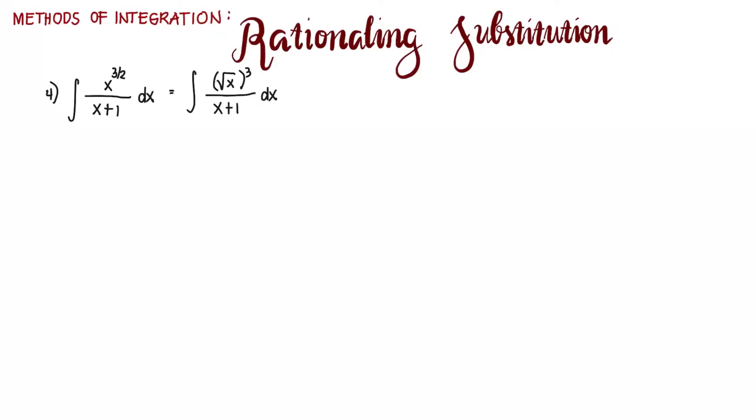Because we have a fraction, an integral, and a radical, we can use rationalizing substitution. We have to eliminate the radical by introducing a new variable u, because there is only a single variable in the radicand or under the radical sign.